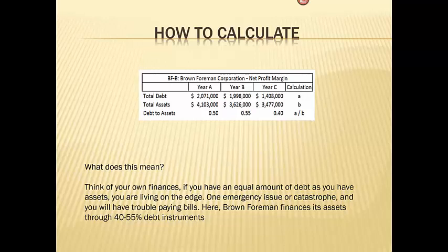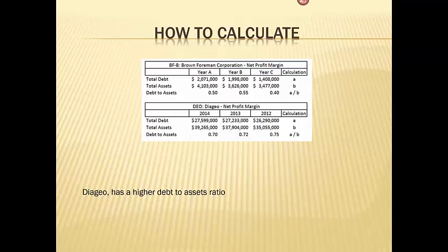So what this means for Brown Foreman is that to finance its assets, they have 40 to 55 percent debt.